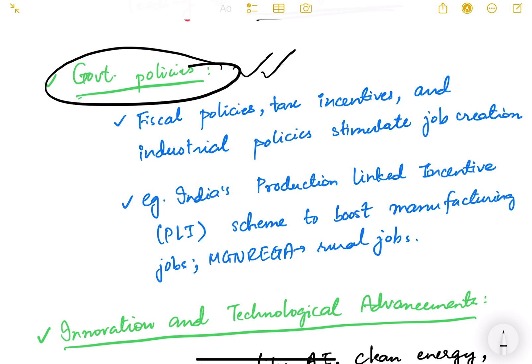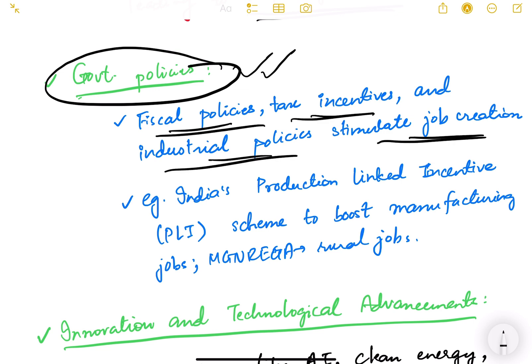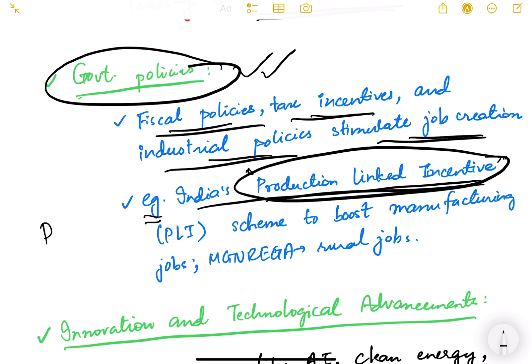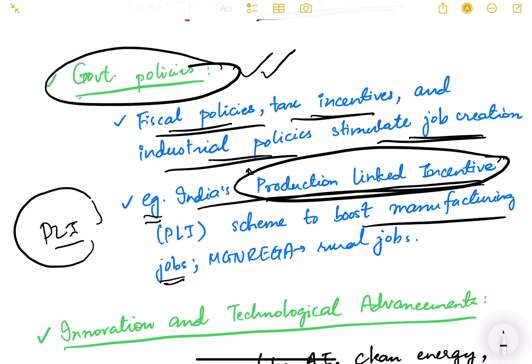The second important driver of job creation is government policies. Government policy should always support and be favorable for job creation. Fiscal policies, tax incentives, and industrial policies stimulate job creation. A key example is India's Production Linked Incentive (PLI) scheme, which aims to boost manufacturing jobs by incentivizing more production in India. Another example is MNREGA, which incentivizes rural jobs.